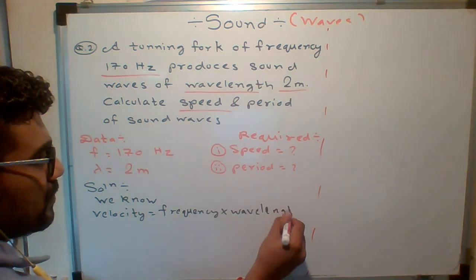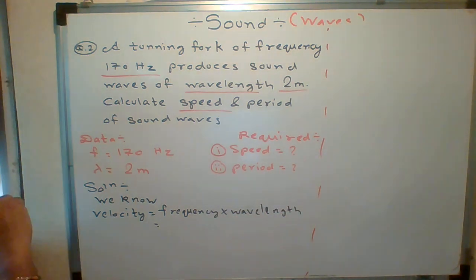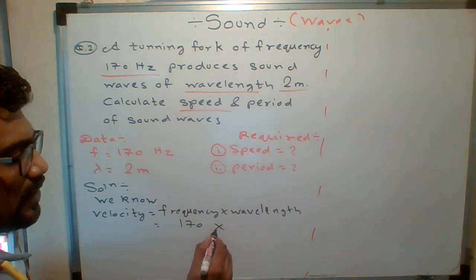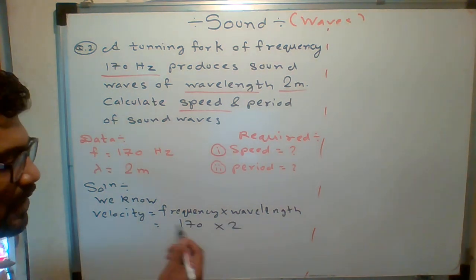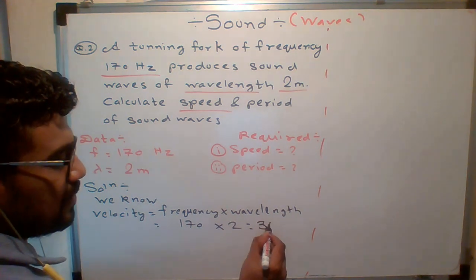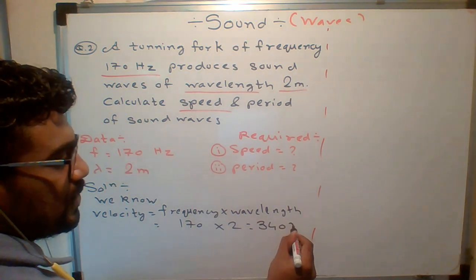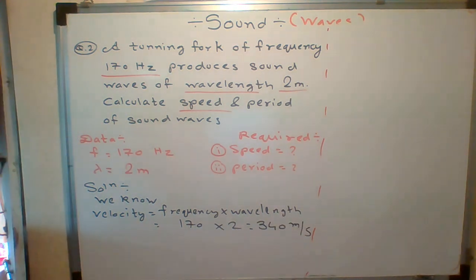What is frequency here? Frequency is 170 and wavelength is what? 2. Just multiply: 170 times 2, how much is it? 340 meters per second.